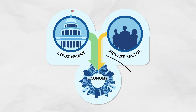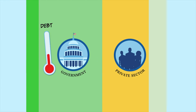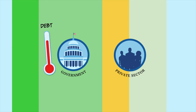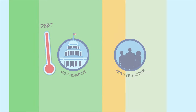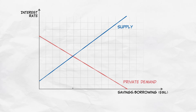Government spending would simply be crowding out private spending and investment and would not, in the short run, stimulate the economy. When the government borrows to cover that additional spending, it affects the entire market for saving and borrowing. Let's look at how the government affects the supply and demand for loanable funds.